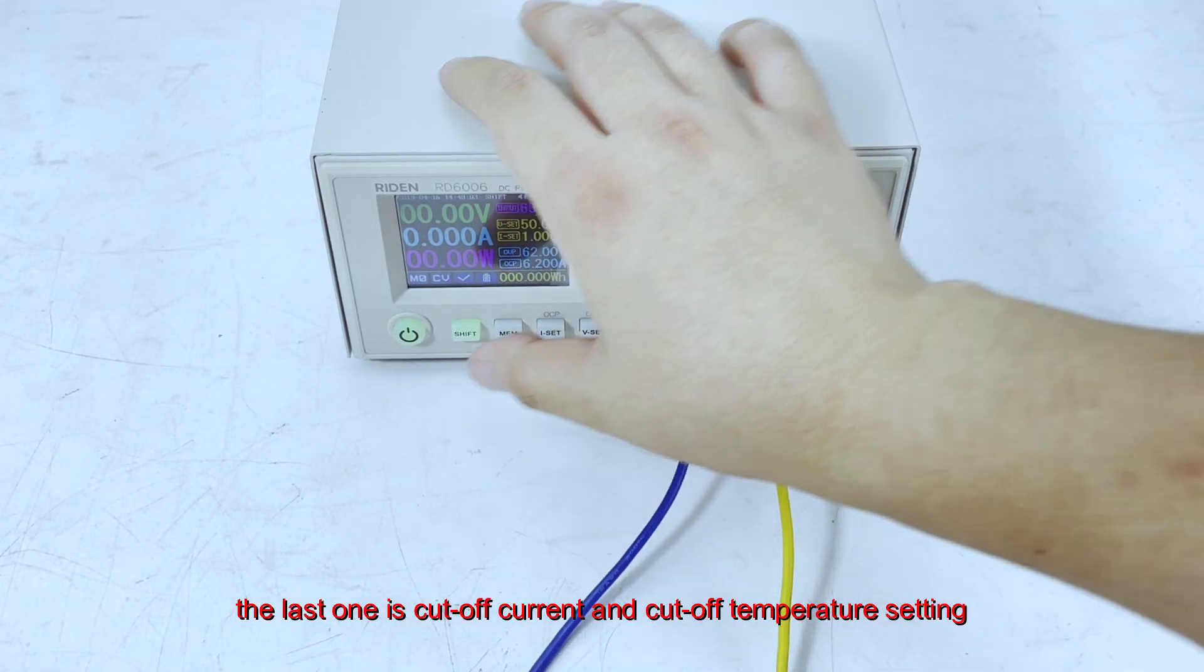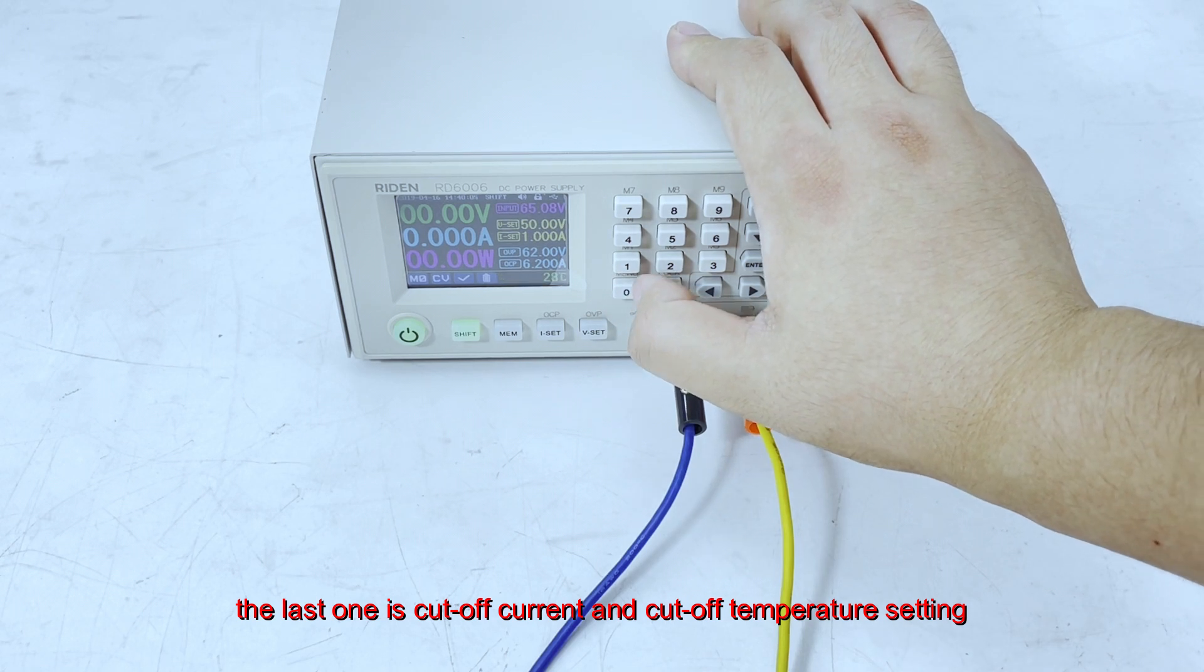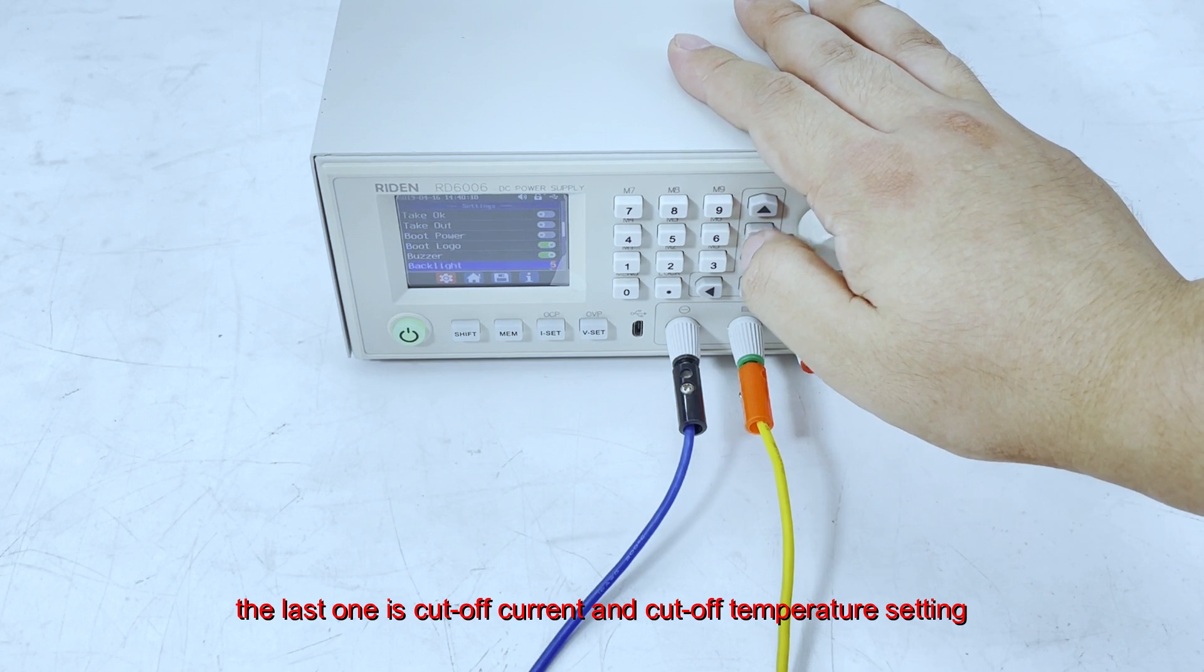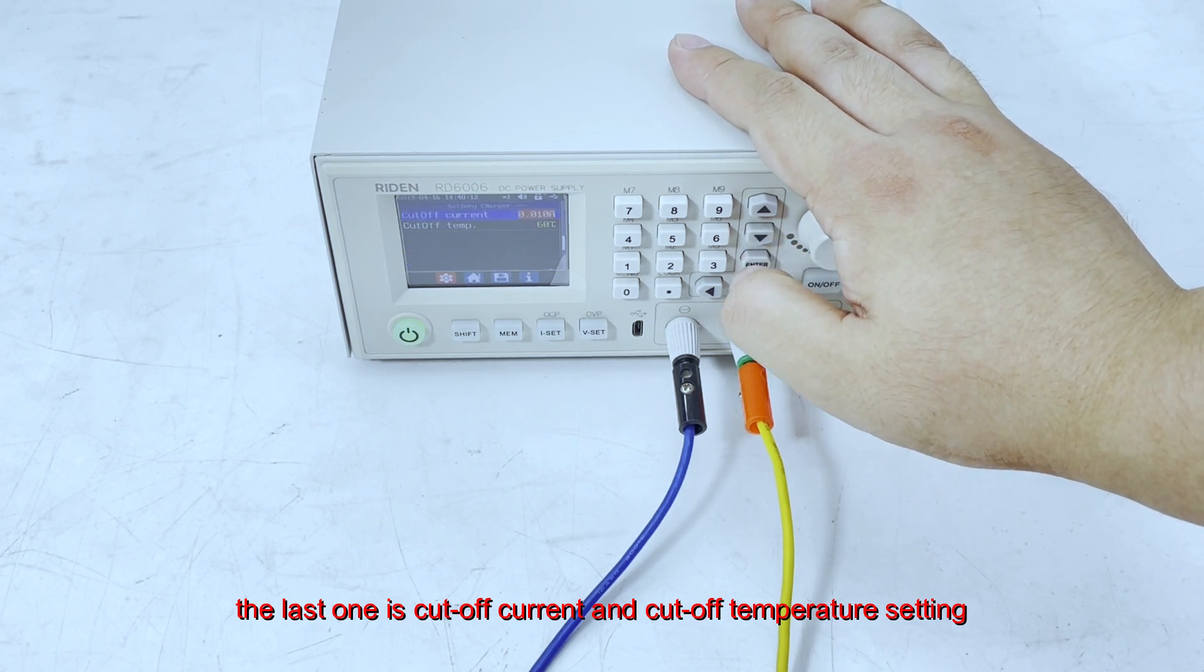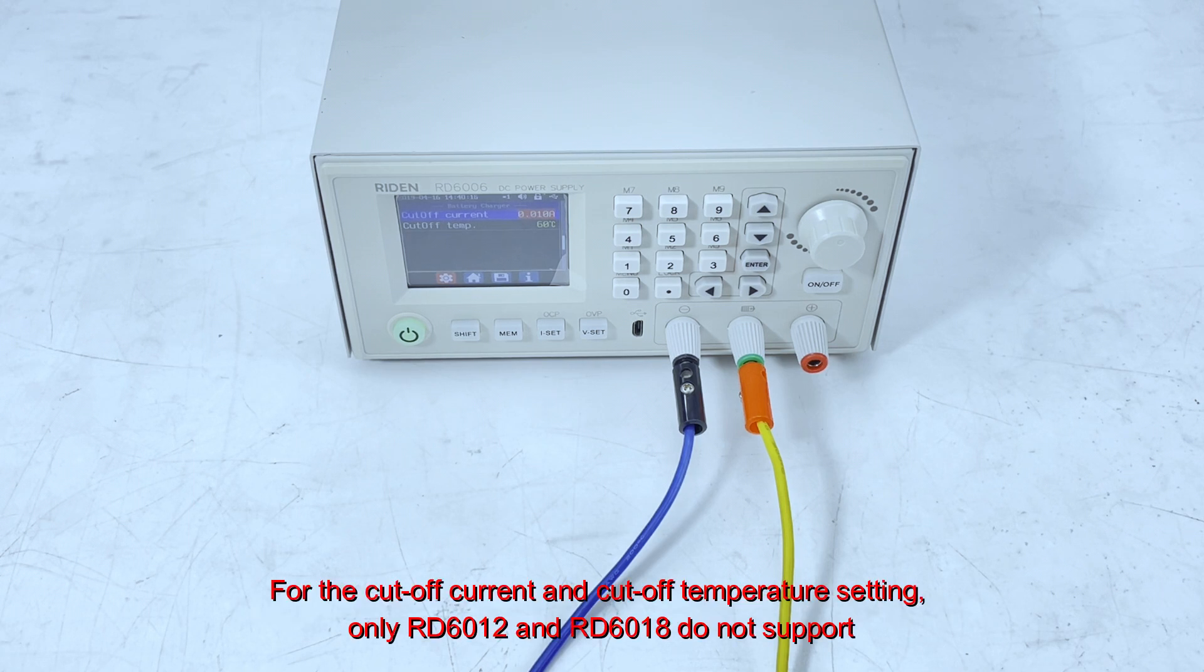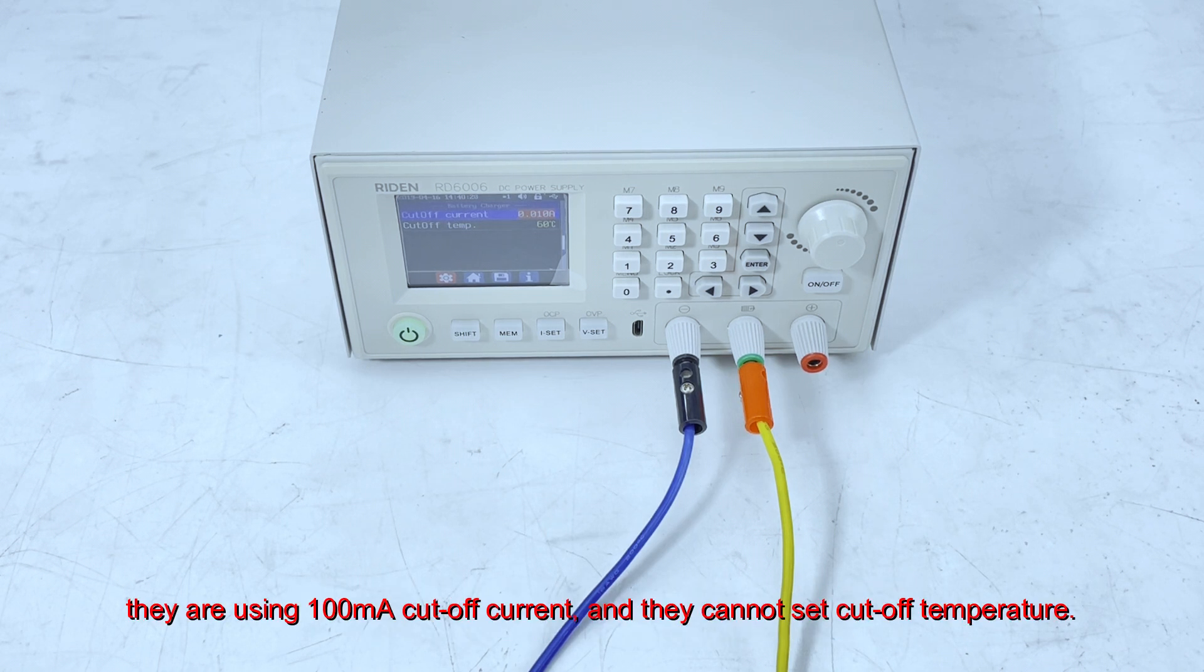And the last one is the cutoff current and temperature. For the cutoff current and the cutoff temperature setting, only RD6012 and RD6018 do not support. They are using 100mA cutoff current and they do not support to set the cutoff temperature.